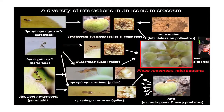The fig and fig wasp system is very old. It's believed to have evolved around 80 million years ago. So for 80 million years the fig and the fig wasp have been very closely associated. The fig symbiosis is all about figs developing nurseries for fig wasps.